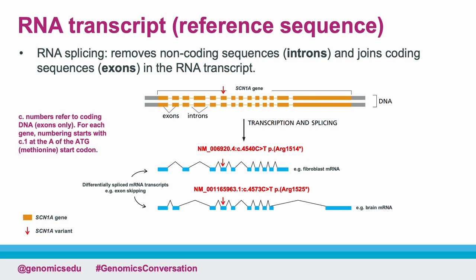When describing a variant, the C number refers to the position of the variant in the coding DNA sequence — that is, the exons only. In each case, the numbering starts with C.1 at the A of the ATG start codon. Because variant nomenclature is only concerned with the nucleotide position in exonic or coding DNA, and not the intronic sequences which have been spliced out, the same variant may have a different nucleotide position — the C number — and corresponding amino acid position — the P number — in different transcripts. So having a variant description without a reference sequence is near useless, like having the street name without the postcode for an address.